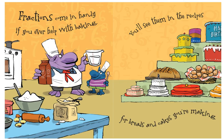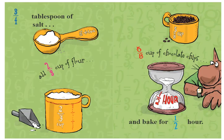Fractions come in handy if you ever help with baking. You'll see them in the recipes for breads and cakes you're making. Three fourths tablespoon of salt. Add two thirds cup of flour. Five eighths cup of chocolate chips. And bake for one half hour.